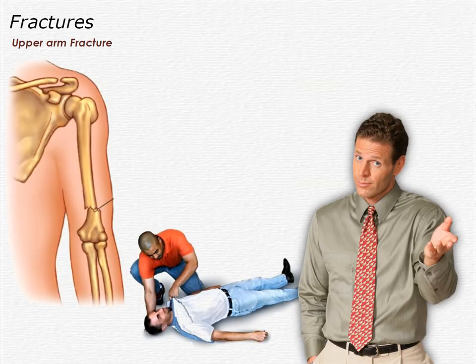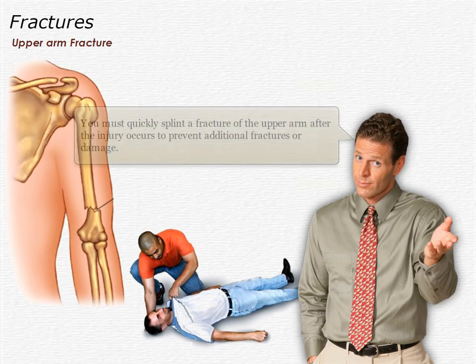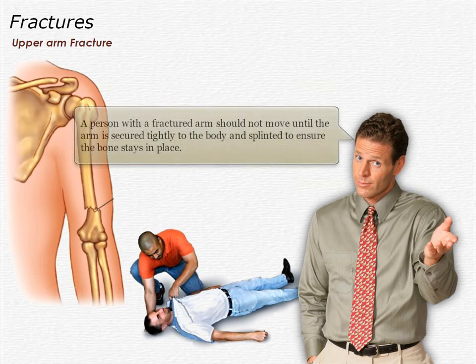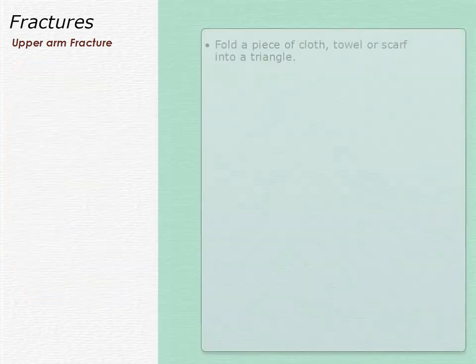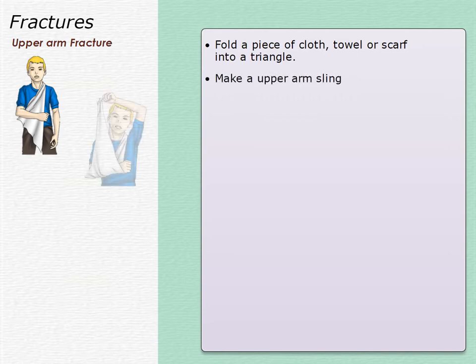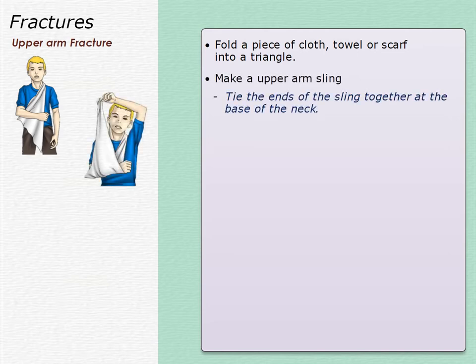How to splint a fracture of the upper arm: you must quickly splint a fracture of the upper arm after the injury occurs to prevent additional fractures or damage. A person with a fractured arm should not move until the arm is secured tightly to the body and splinted. Fold a piece of cloth, towel, or scarf into a triangle to make the upper arm sling. Tie the ends of the sling together at the base of the neck so the arm is held securely to the body.